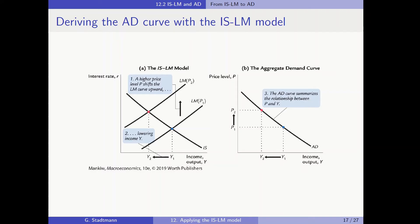Now we would like to find out what happens if the price level increases from P1 to P2. When the price level increases, this leads to a shock on the money market because real money supply M over P is affected. When the price level increases, M over P decreases — real money supply is down. This shifts the LM curve to the left or upwards, and we get a new equilibrium in the red dot. So when the price level increases from P1 to P2, demand for goods decreases from Y1 to Y2, and hence we have a second point found for our demand relationship.